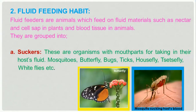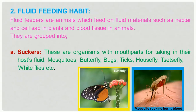Number two type of feeding habits: fluid feeding habits. Fluid feeders are animals which feed on fluid materials such as nectar and cell sap in plants, and blood tissues in animals. They are grouped into two categories. A: the suckers. These are organisms with mouth parts for sucking in their host's fluid — they feed on liquid food. Mosquitoes, butterflies, bugs, ticks, housefly, tsetse fly, whitefly, and so on are all suckers. A butterfly feeds on nectar, a fluid sugary substance inside a flower, and here, a mosquito is shown sucking its host's blood.